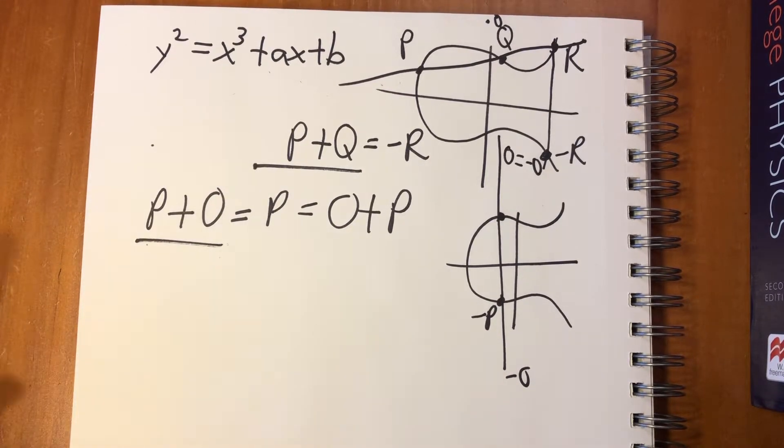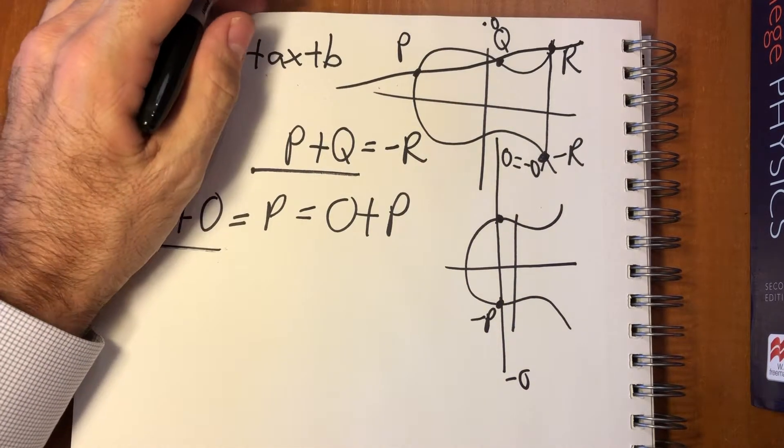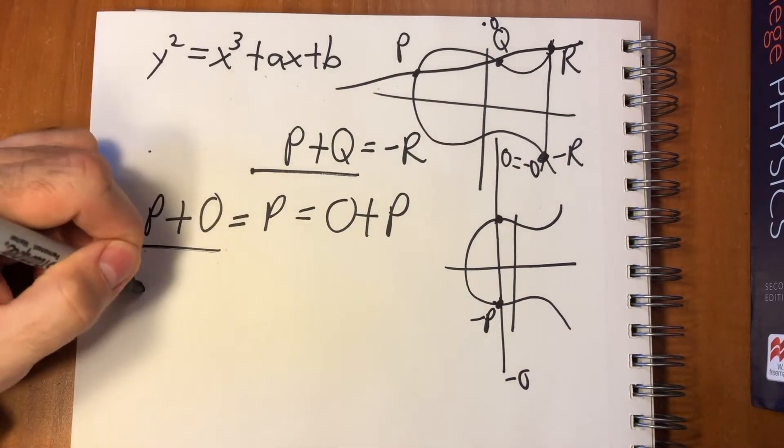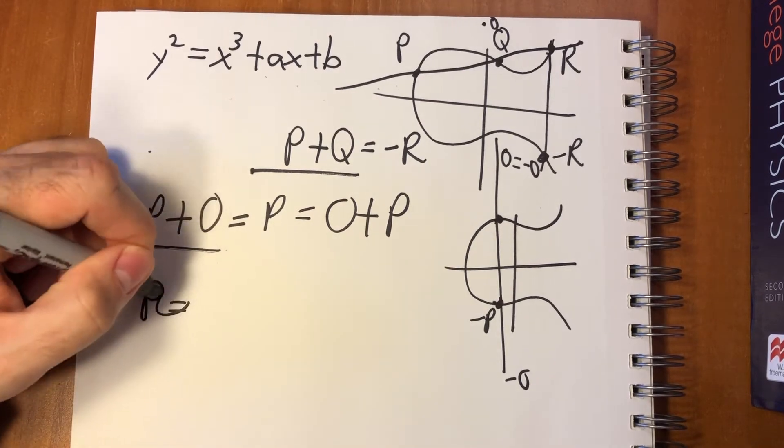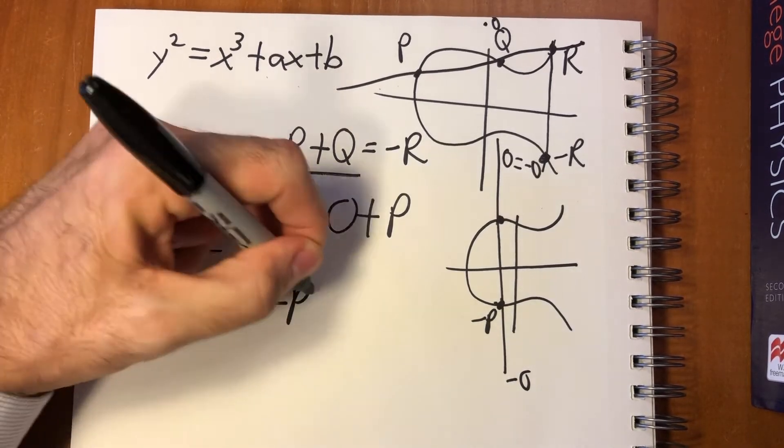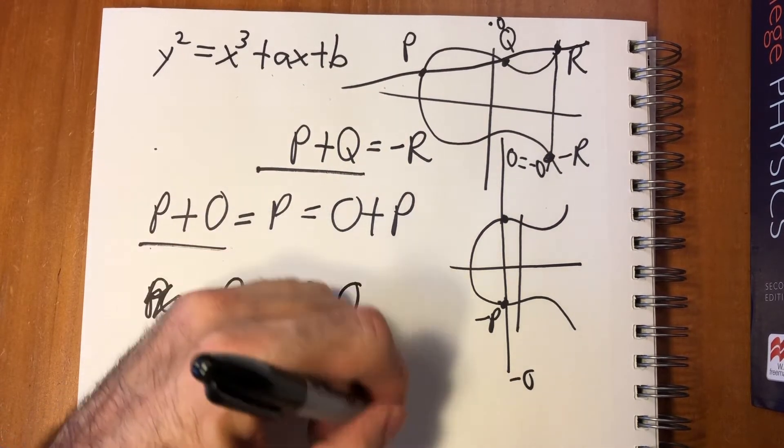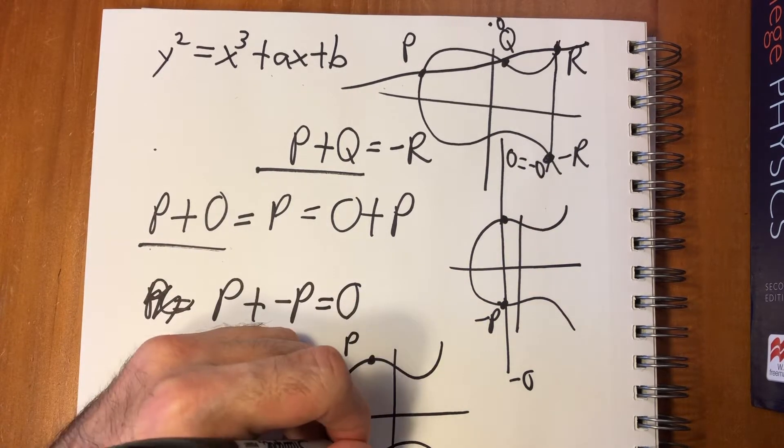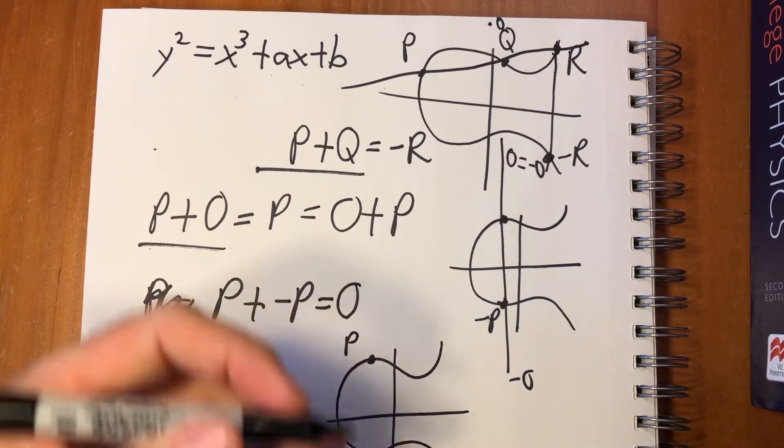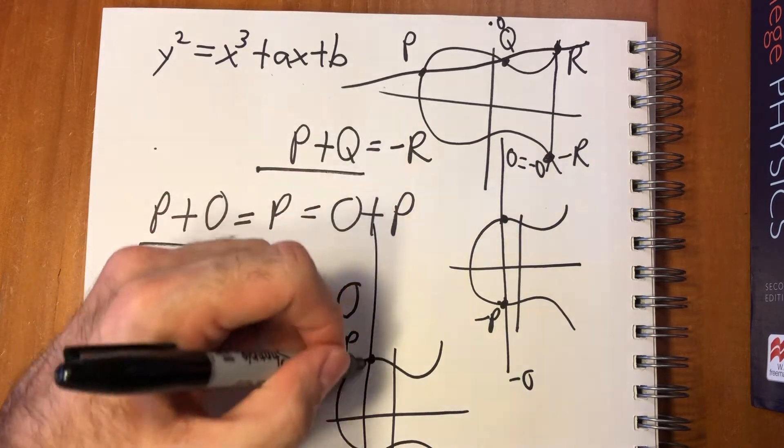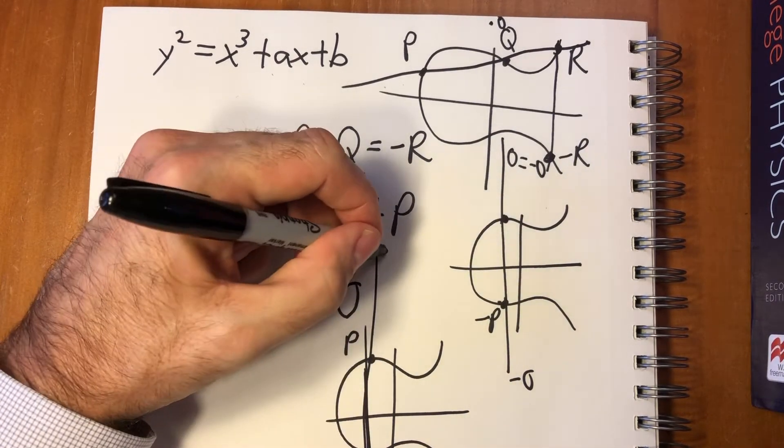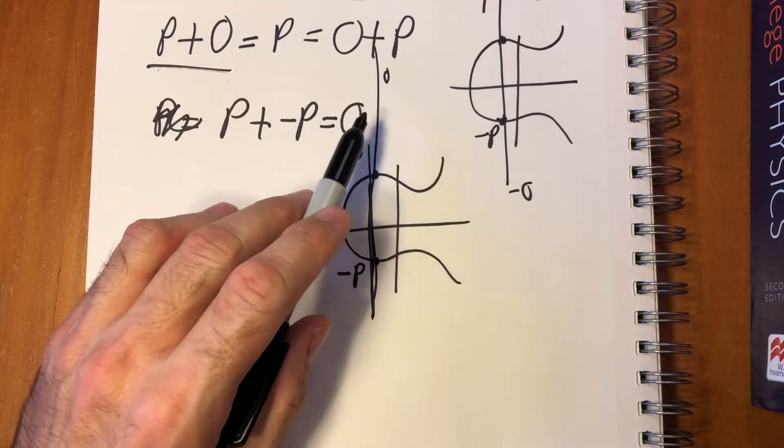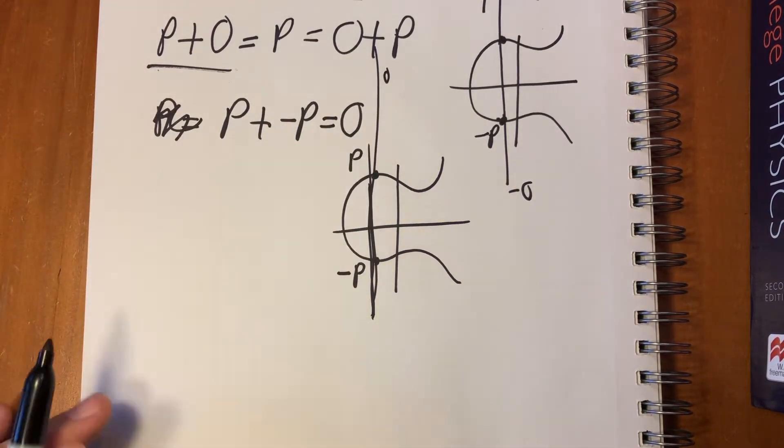The next thing is that because each point has its opposite, we also have inverses. So P + (-P) = O. You can see that easily as well. So if we have a point P, then -P is here. It's just a reflection. That means this is a vertical line, so it's going up through infinity. That's the identity element.